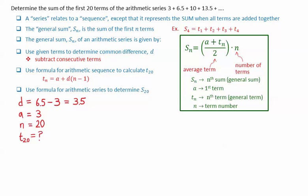We can use this information to calculate the 20th term. Tn equals a plus D times n minus 1. Substituting a equals 3, D equals 3.5, and n equals 20, we get T20 equals 69.5.